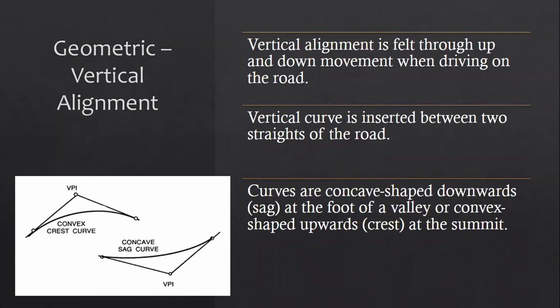Vertical alignment is felt through up and down movements when driving on the road. Vertical curves are inserted between two straights of the road. Curves that are concave (shaped downwards) are called sags and occur at the foot of a valley; curves that are convex (shaped upwards) are called crests at the summit. So at the top of a hill it is a crest, and at the bottom of a hill it is a sag.